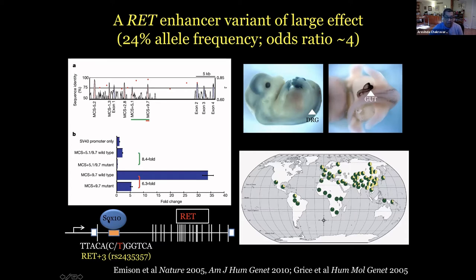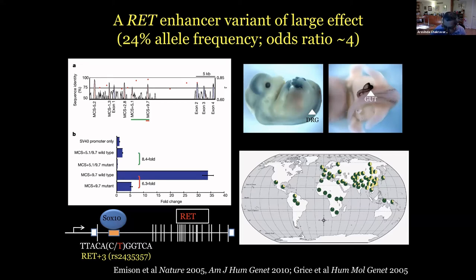This eventually we showed was an enhancer — an enhancer that bound SOX10. It was a simple substitution, very frequent: 24% in controls in Africa, nearly absent in Europe, about 45% in Asia. It was an enhancer specific to dorsal root ganglia as well as the gut. We were excited because this was the first example of a common polymorphism disrupting a non-coding element that was a gut-specific enhancer, leading to loss of this cell type.